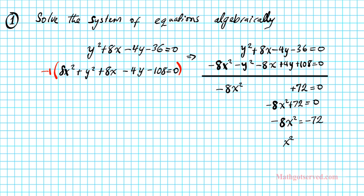You have x² = 9. And then you take the square root of both sides. And you have x = ±3.